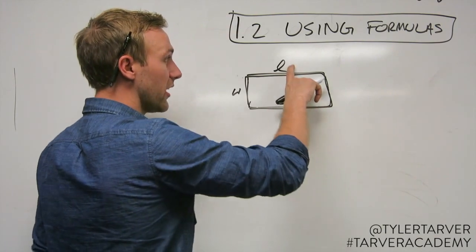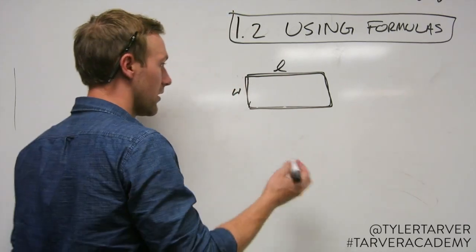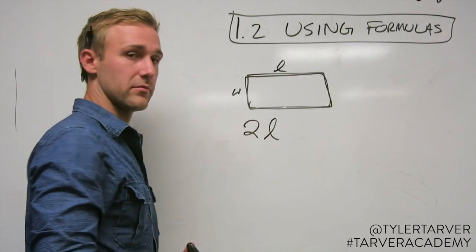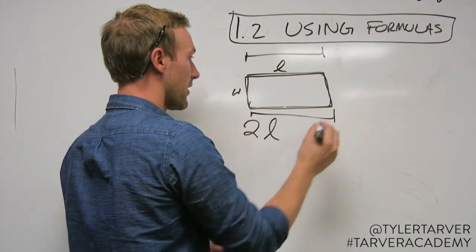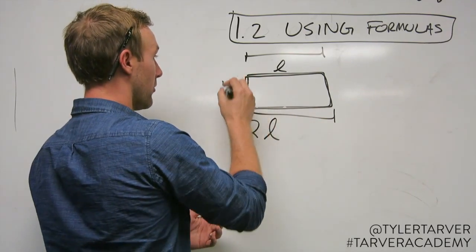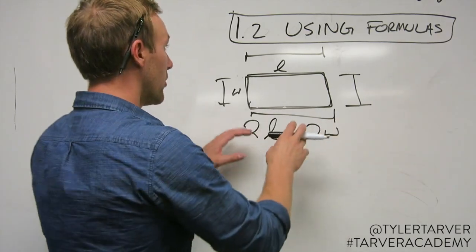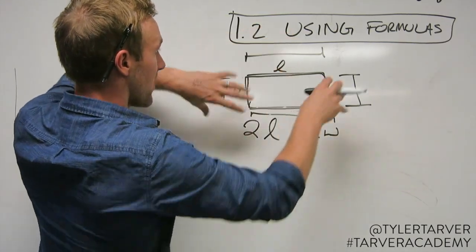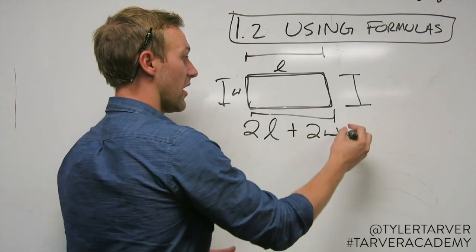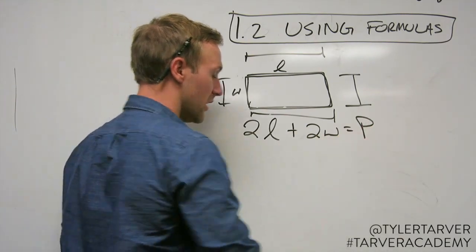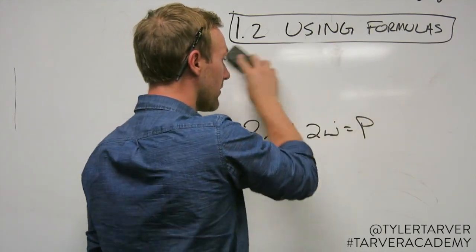Now we have two lengths. So what's a shortcut for saying you're going to add up two lengths together? Two times the length — that would find the measure of this side and this side. Now what would I do to find my two widths? We know these are going to be the same length, so I could just do two times the width. What am I going to do with those numbers to find the total? I'm going to add those two together, and that's going to equal my perimeter. So right here we've got the formula for the perimeter of a rectangle. This is a formula.